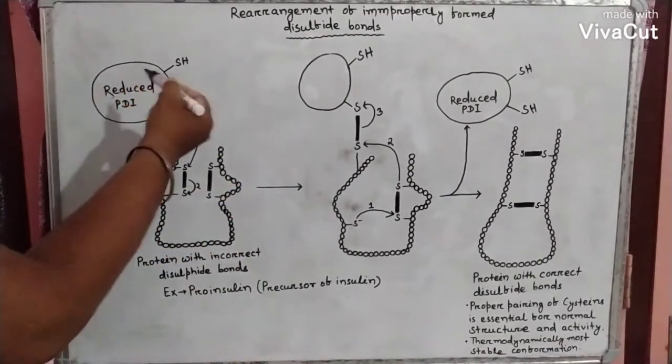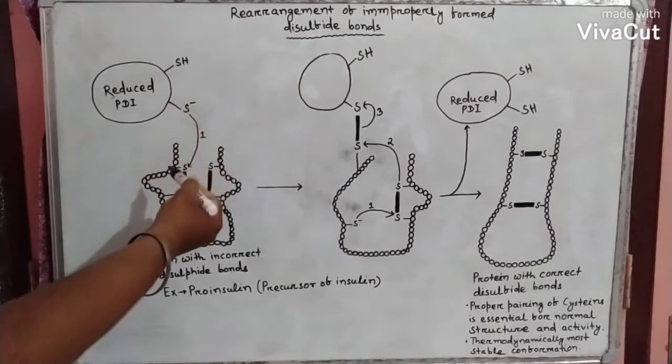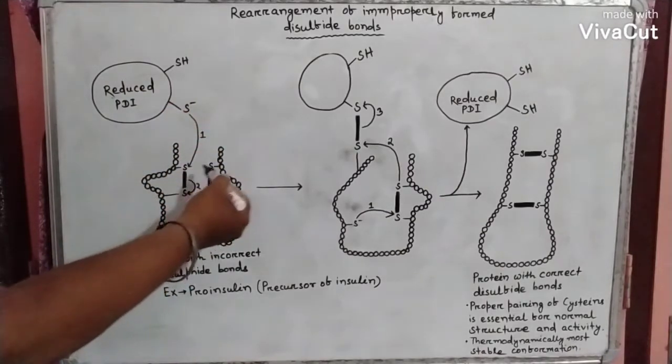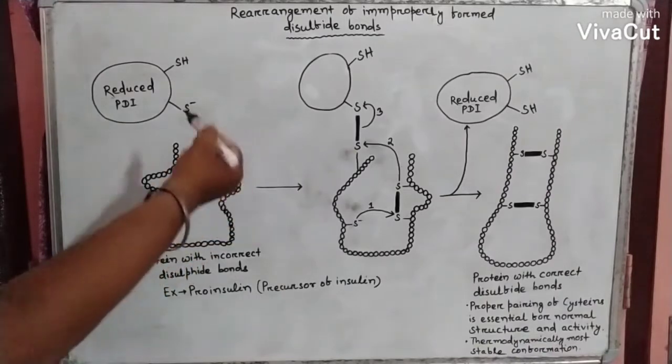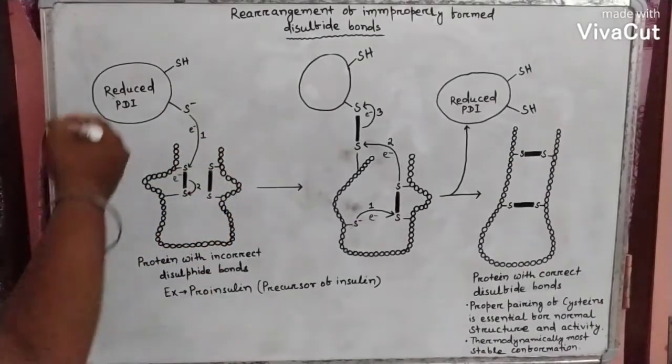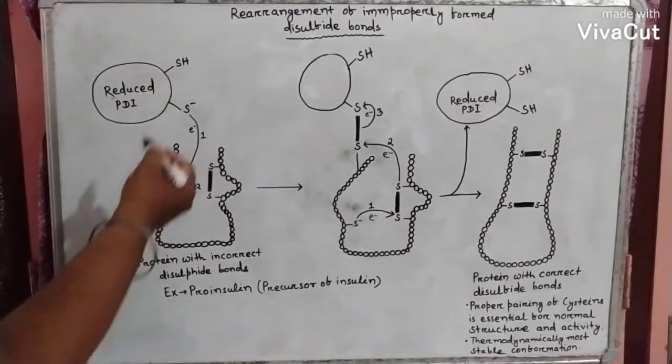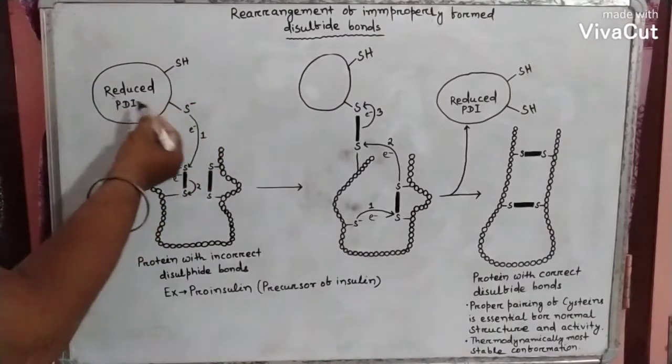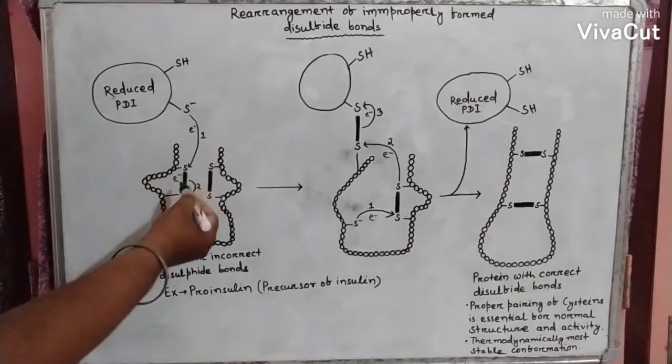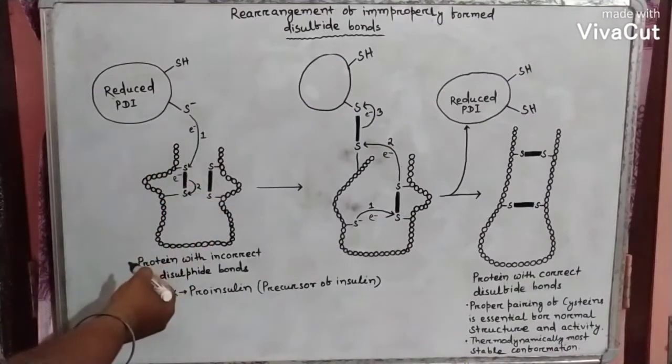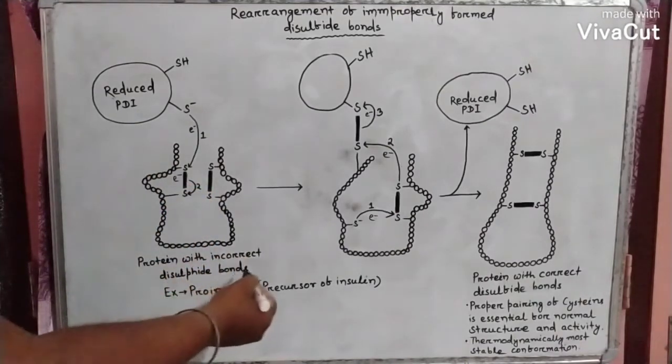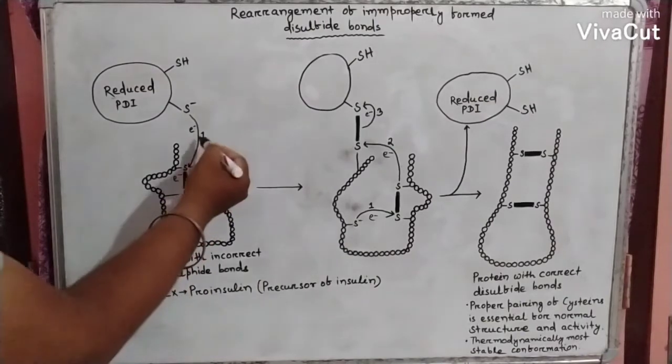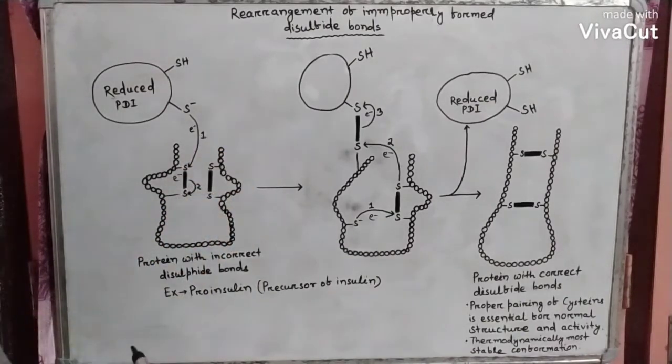The reduced PDI then catalyzes the rearrangement of improperly formed disulfide bonds. During the rearrangement reaction, electrons are transferred from the thiol group of reduced PDI to the disulfide of protein with incorrect disulfide bonds. The one and two steps of this reaction represent the sequential electron transfer.